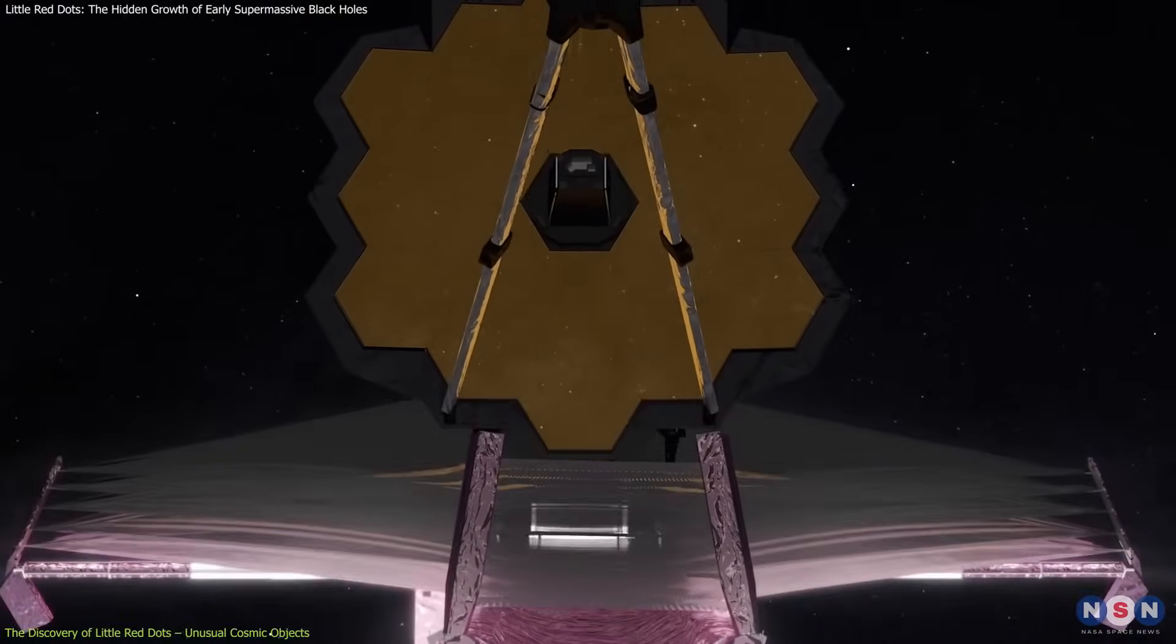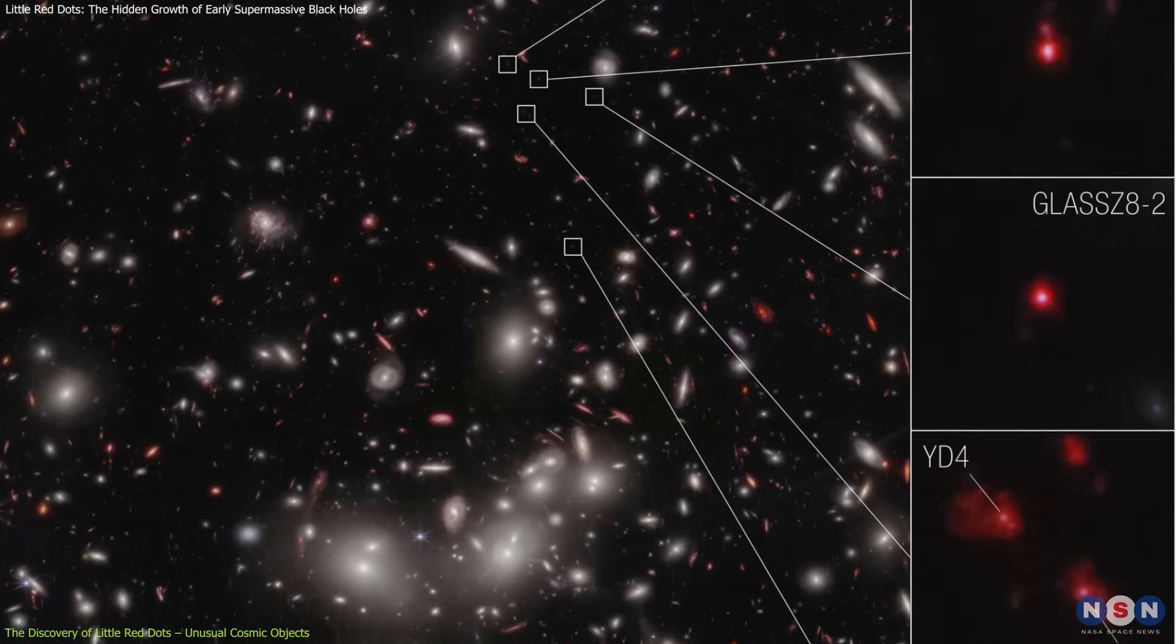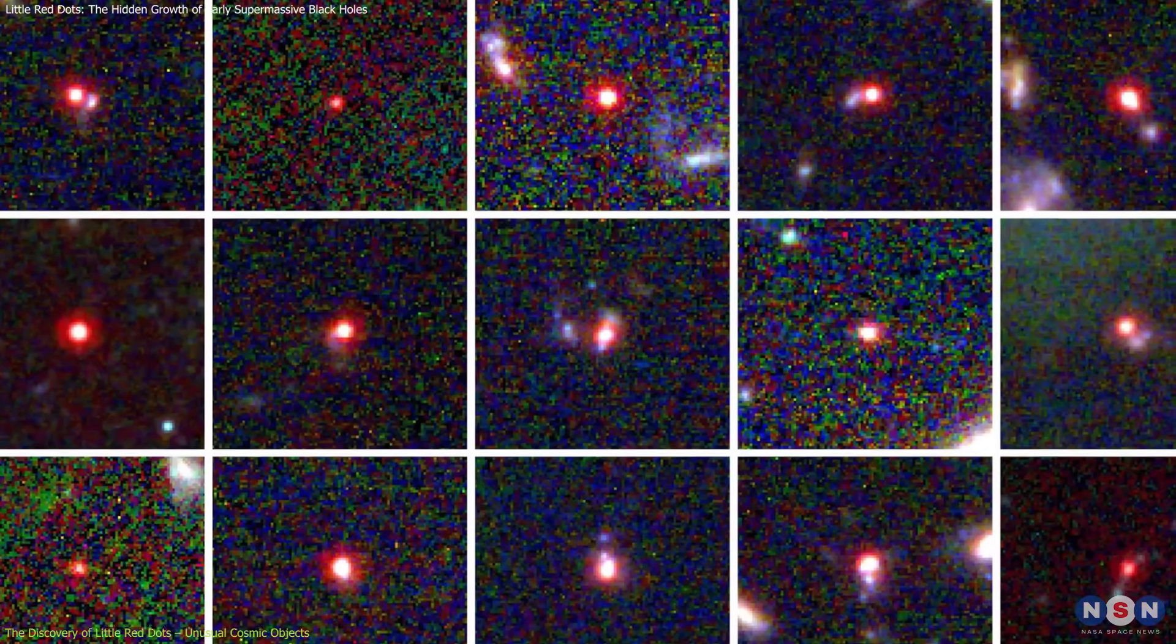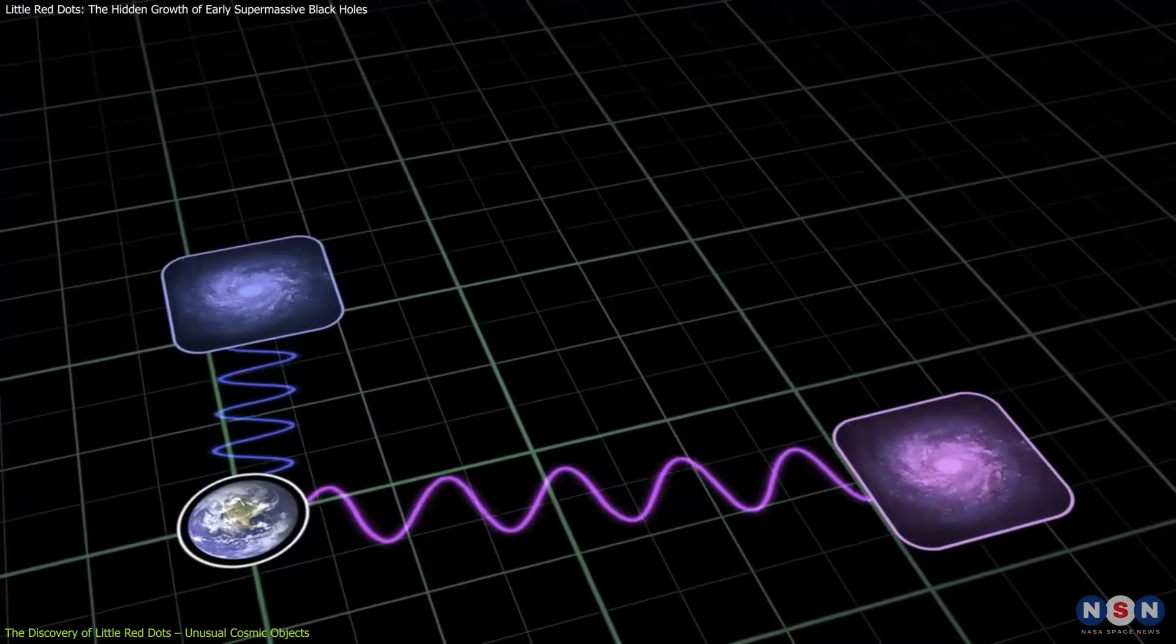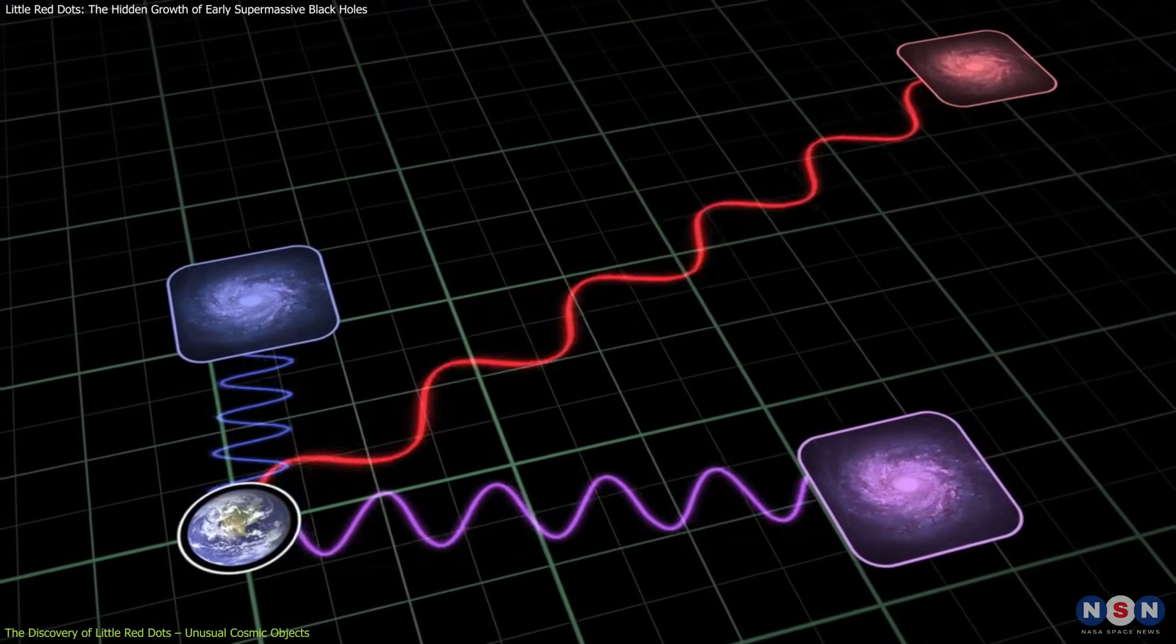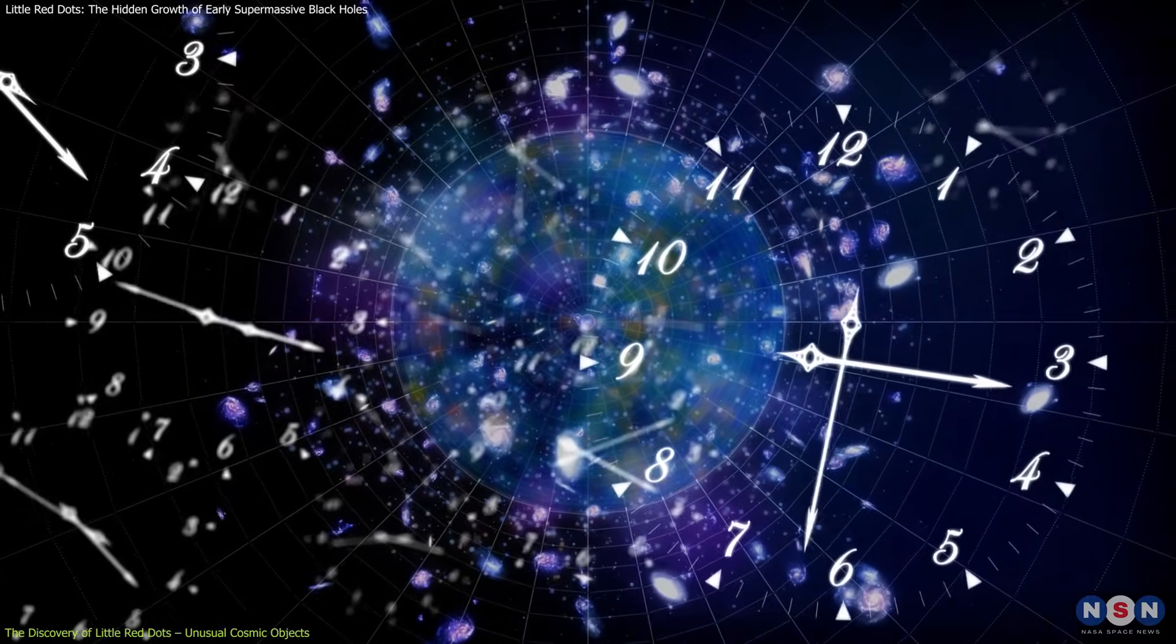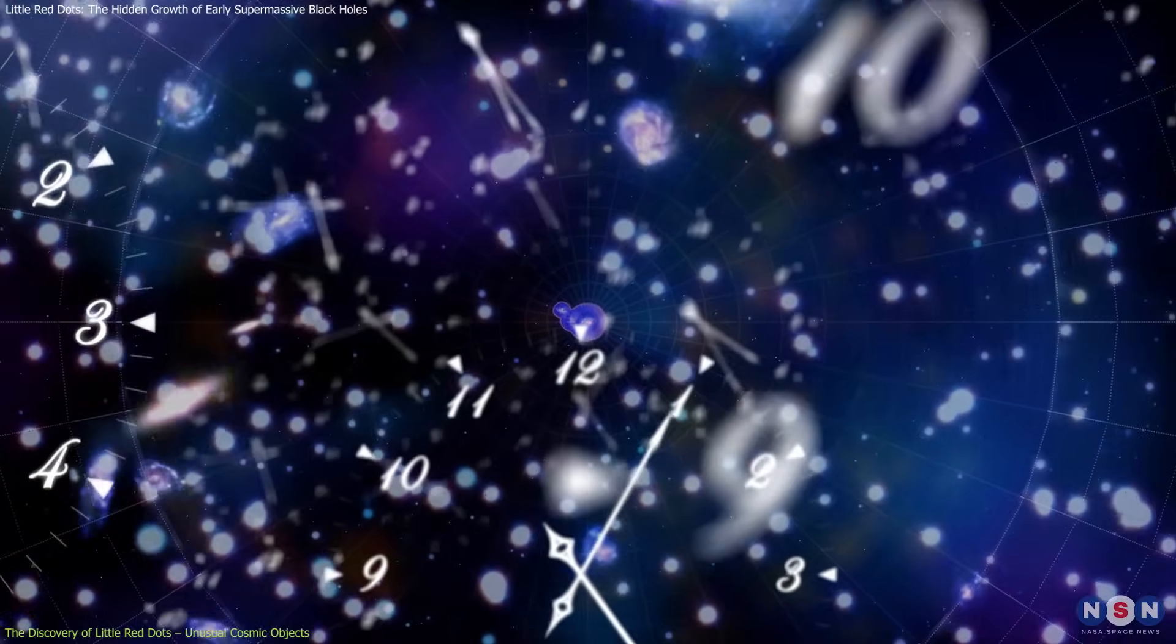Webb's deep space surveys have detected numerous small, red-hued objects scattered across the early universe. These little red dots, LRDs, stand out due to their extreme redshift, meaning their light has been stretched over billions of years as the universe expanded. Observing them is like looking back in time to when the universe was only a few hundred million years old.